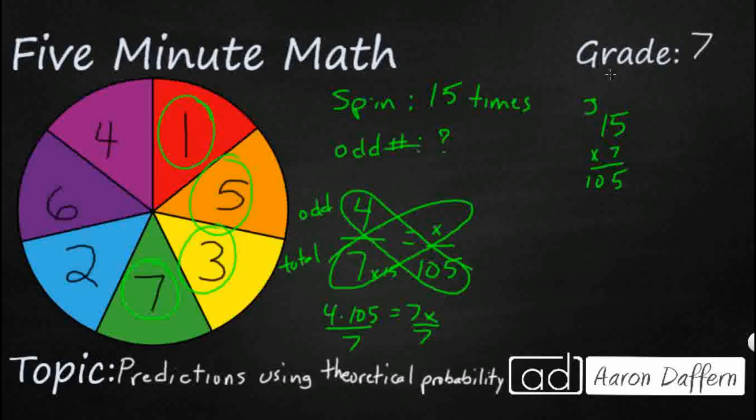But you know what? We already know that we're multiplying by 15. There's 15 spins. So there's no need to do all of that. Let's just go ahead and do 4 times 15. And X is going to equal 60. So 60 over 105 reduces down to 4 sevenths.